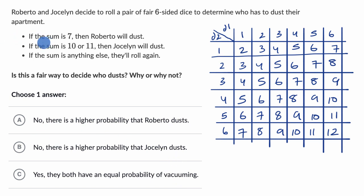All right, let's think about this scenario. If the sum is seven, then Roberto will dust. So where is the sum seven? So we have that once, twice, three times, four, five, six.